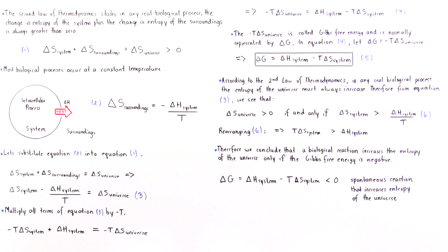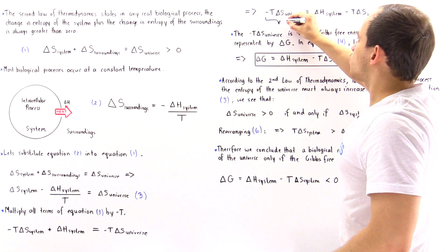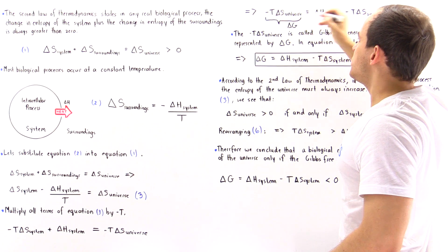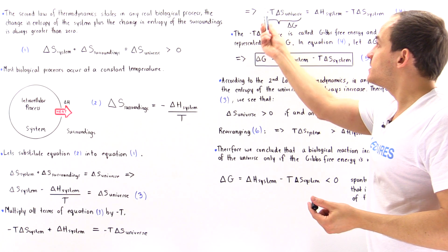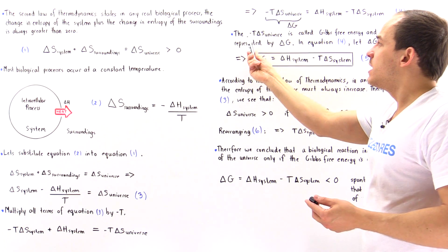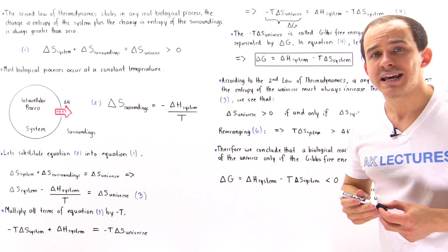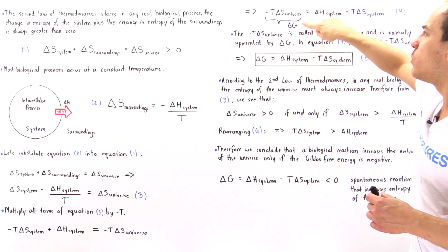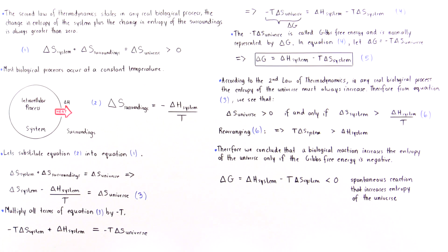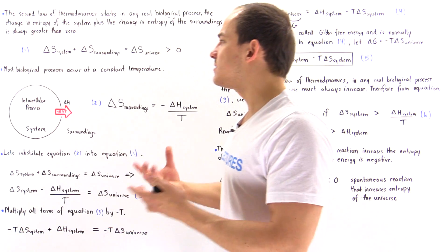So equation four states: the negative of temperature in Kelvins multiplied by the change in entropy of the universe equals the change in enthalpy of the system minus the temperature multiplied by delta S of the system. If we represent the left-hand term — negative T times delta S of the universe — as delta G, then we get equation five, the more common Gibbs free energy equation. Delta G has units of joules and equals delta H of the system minus T times delta S of the system.